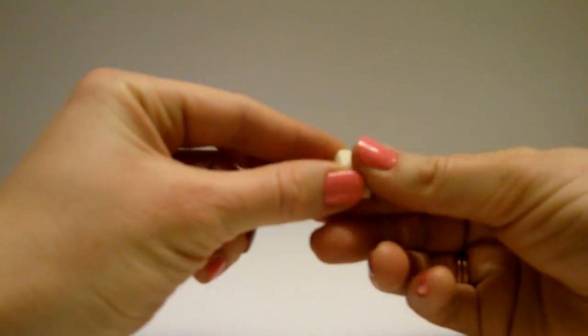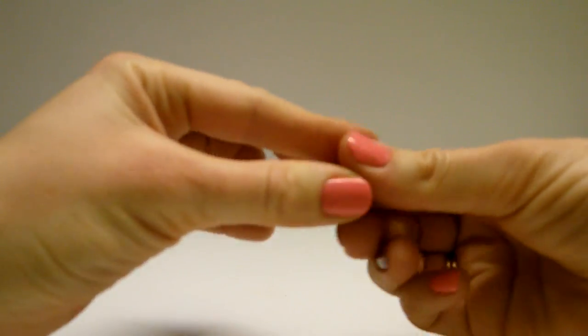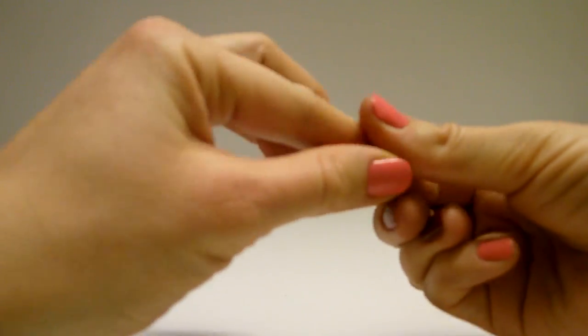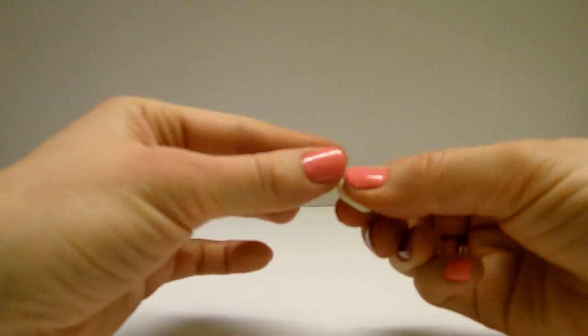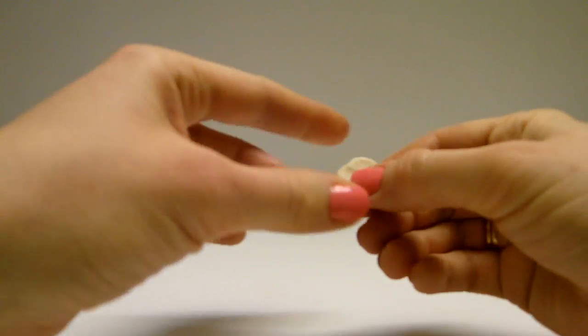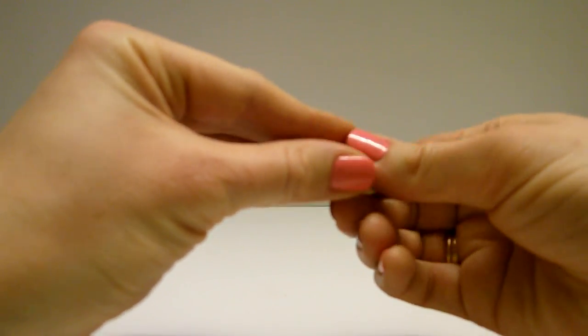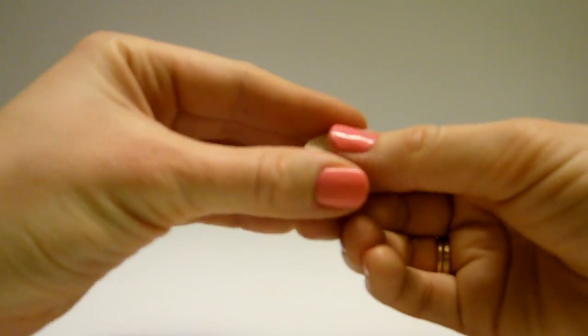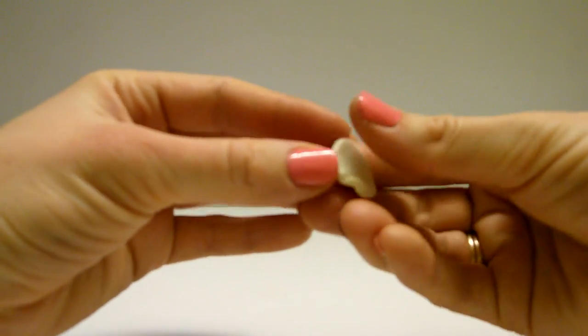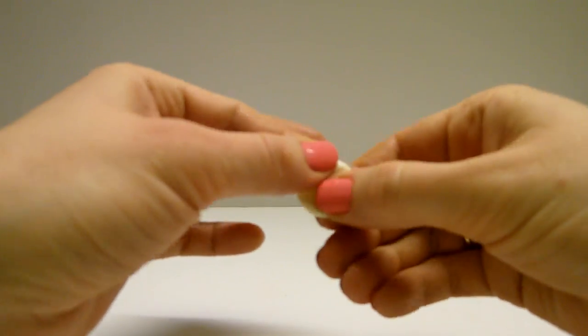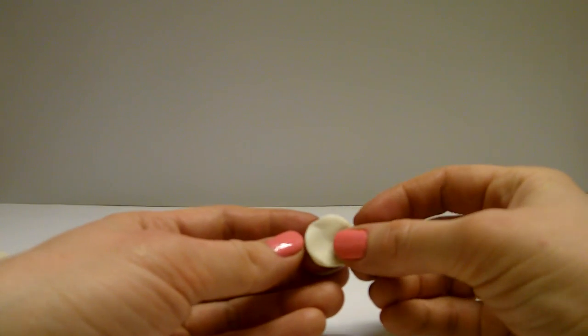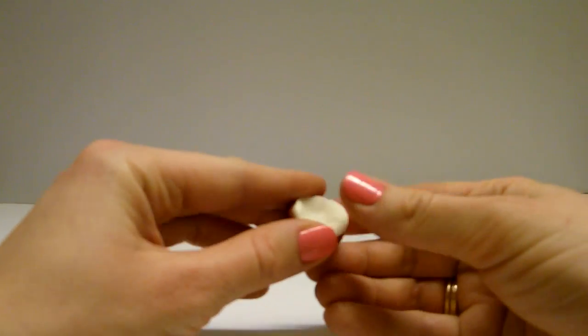Take a piece of white clay and make a ball of it. Then flatten the ball into a pancake. The diameter of this pancake should be equal to the diameter of the mushroom head. Stick this white part to the bottom of the mushroom head.